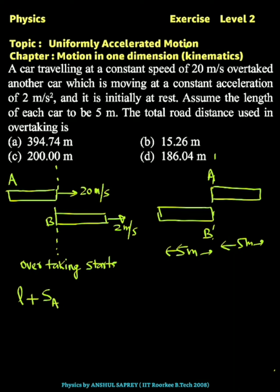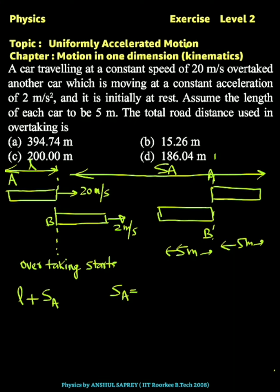As you can see in the diagram, this length L plus the displacement traveled by car A gives the total length of the road used. Sa equals constant velocity 20 multiplied by time t, where t is the time of overtaking. Now we need to find the time of overtaking.